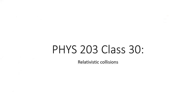Welcome to Physics 203, class 30. This class is on relativistic collisions, a very interesting topic. We'll be using the concepts of conservation of relativistic momentum and relativistic energy, which we talked about in our previous class, as well as the center of mass frame. We'll develop transformations to move into the center of mass frame, and look at a positron colliding with a proton — a positron is like an electron but positively charged.